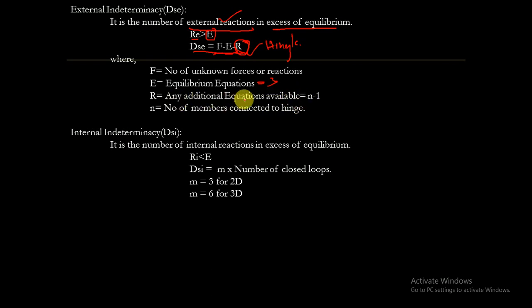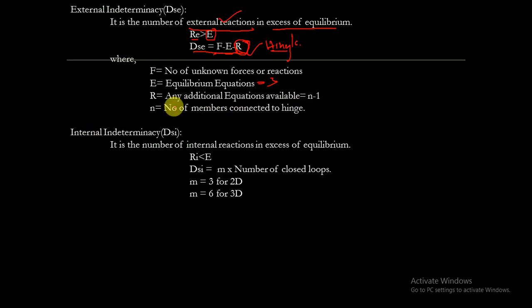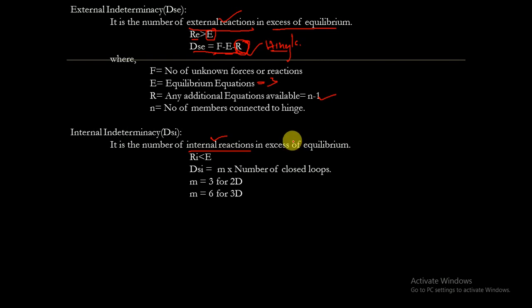We get additional equations whenever a hinge is given in the structure. The additional equation equals n minus 1, where n is the number of members connected to the hinge. Internal indeterminacy is the number of internal reactions in excess of equilibrium.